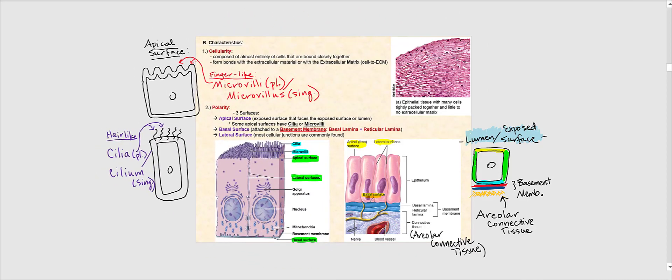The next characteristics of epithelial tissue begin with cellularity. Epithelial tissue is composed almost entirely of cells that are closely bound together. It can also form bonds with the extracellular material or extracellular matrix, seen at the basal surfaces of epithelial tissue.